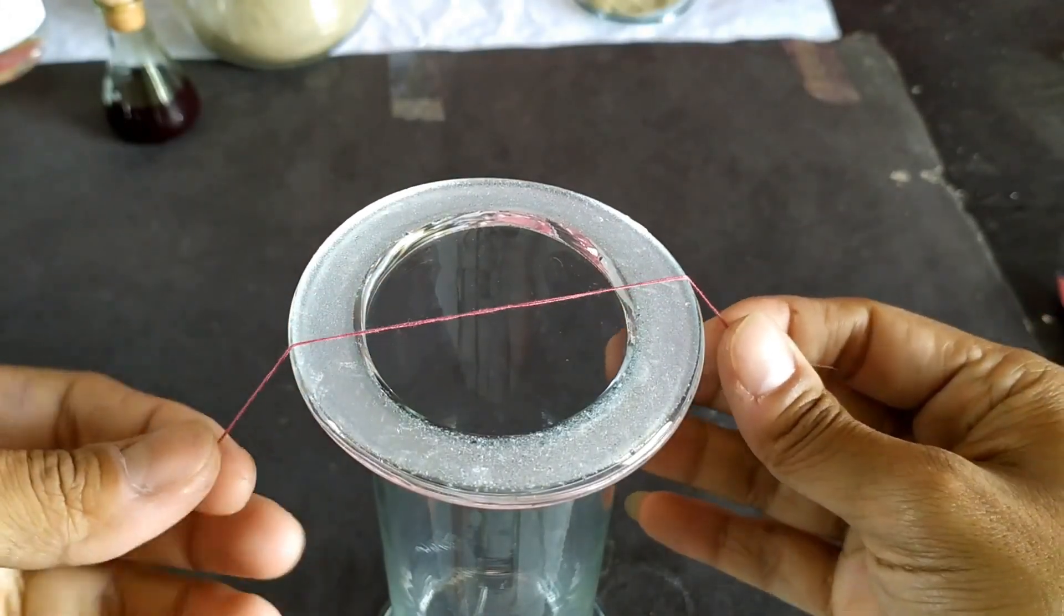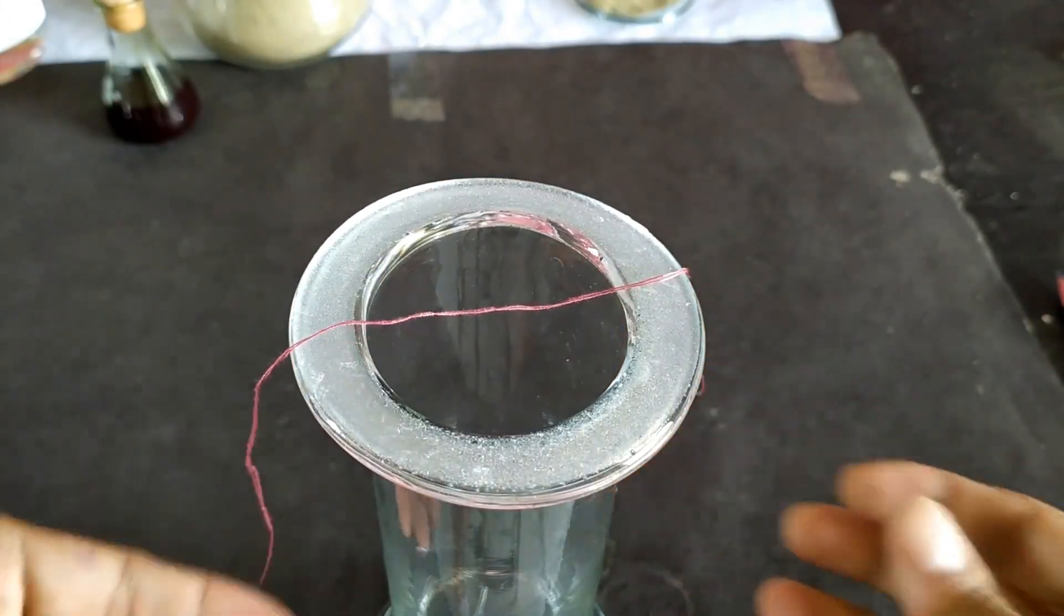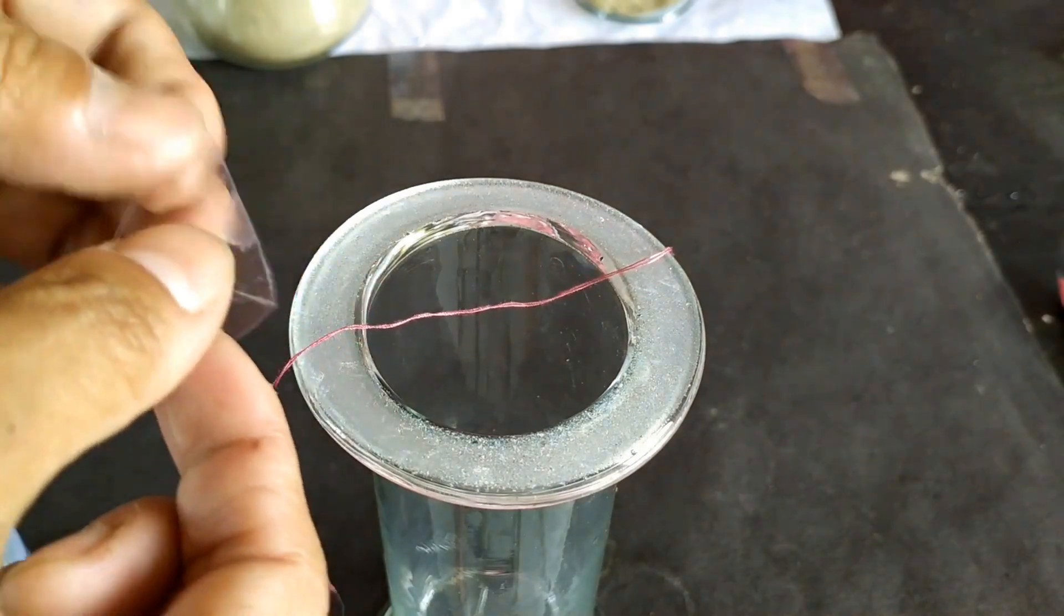Take the chromatography jar and stretch a thread across the diameter of the mouth of the jar and secure with sellotape.